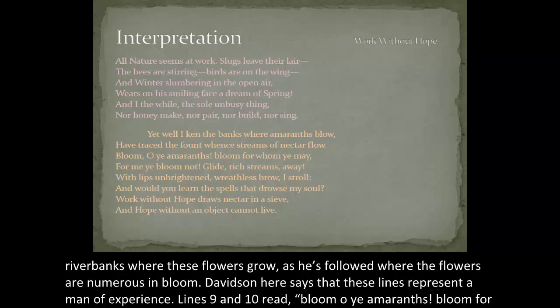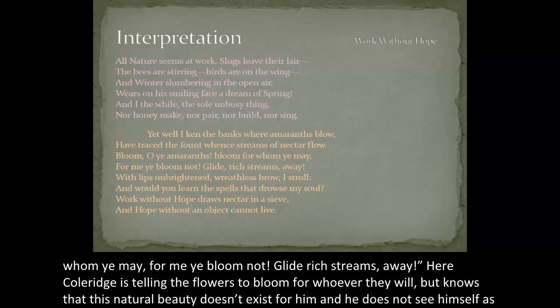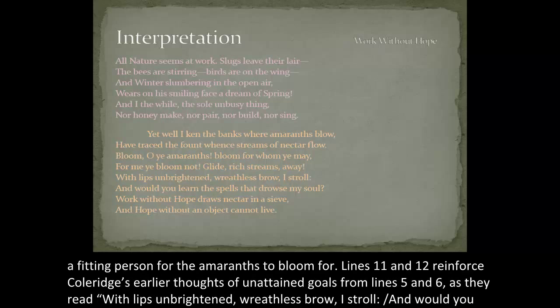Davidson says that these lines represent a man of experience. Lines nine and ten read: 'Bloom, O ye amaranths, bloom for whom ye may, for me ye bloom not, glide rich streams away.' Here Coleridge is telling the flowers to bloom for whoever they will, but knows that this natural beauty doesn't exist for him, and he does not see himself as a fitting person for the amaranths to bloom for.